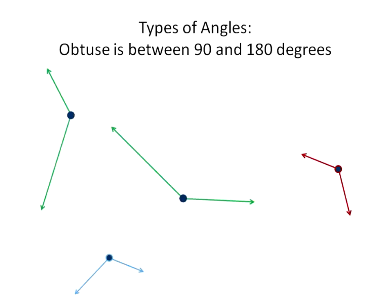So those are examples of three types of angles: acute, obtuse, and the right angle. Remember, an angle is made up when a ray here and another ray have the same end point.